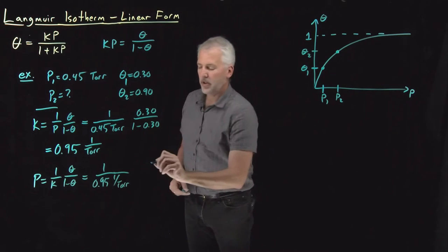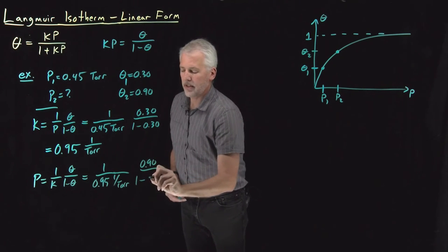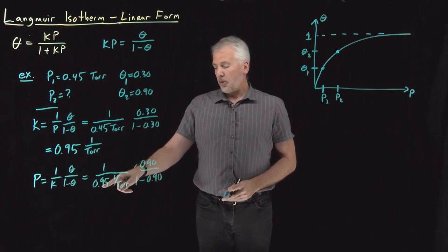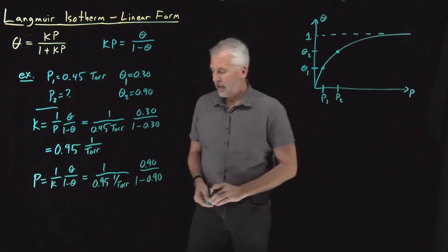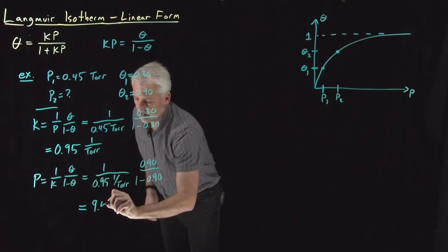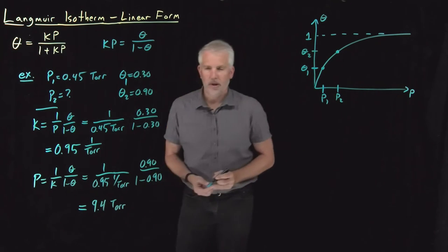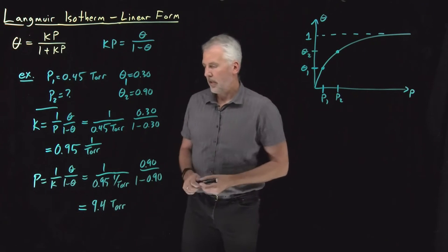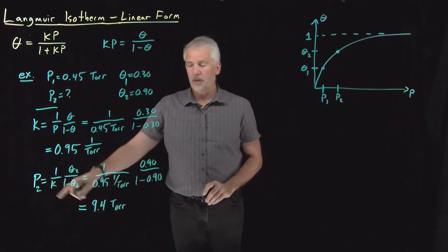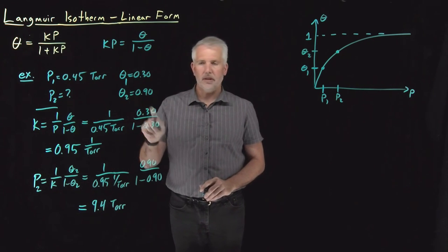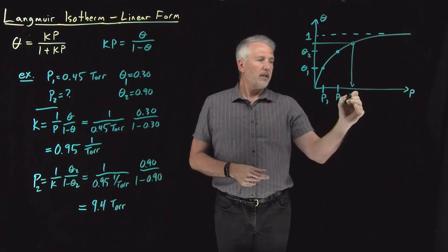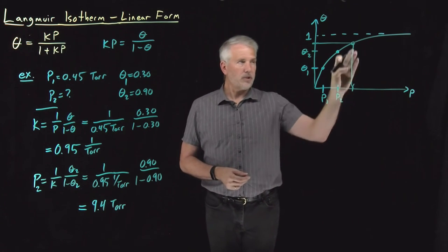The theta I'm interested in is 0.9, so I've got 0.9 on top and 1 minus 0.9 on the bottom. So if I take 1 over 0.95 and multiply it by this ratio of 9, I'll get a pressure of about 9.4 torr. So if I use p2 and theta2, I'll determine the pressure at which the surface coverage will reach 0.9. So if I'm interested in up here at 0.9, that's the pressure at which I reach 0.9.